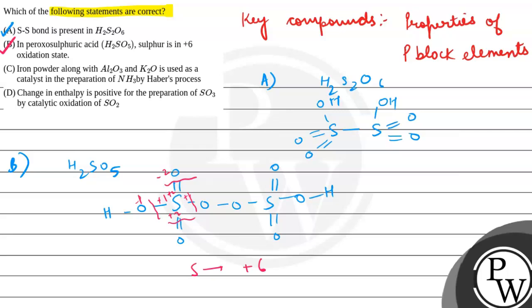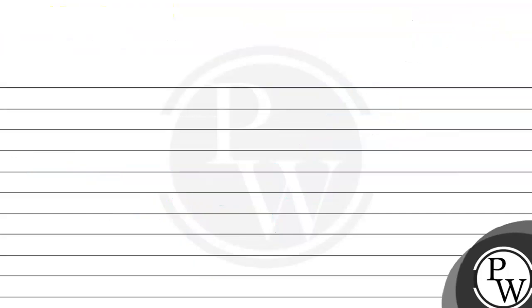Third, we are saying that iron powder along with Al2O3 and K2O is used as catalyst in the preparation of NH3 by Haber's process. Here we have iron powder catalyst used in Haber's process. N2 plus 3H2 forms ammonia.